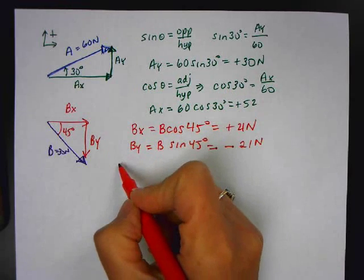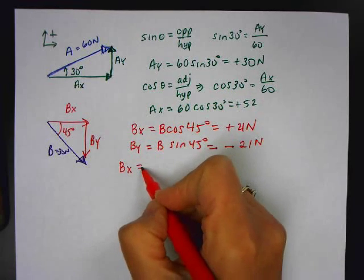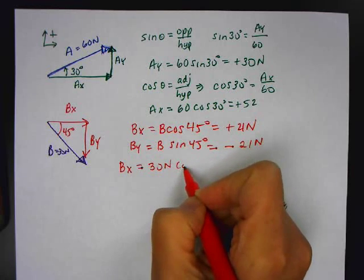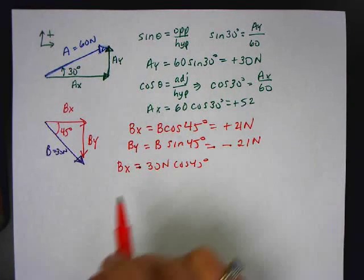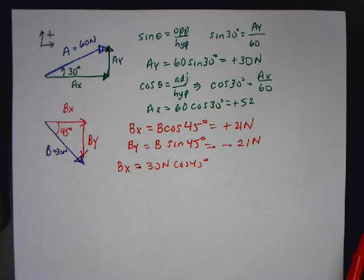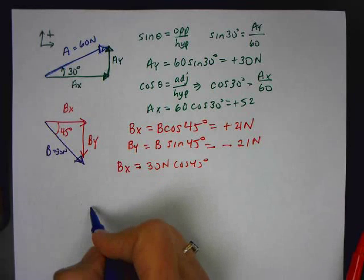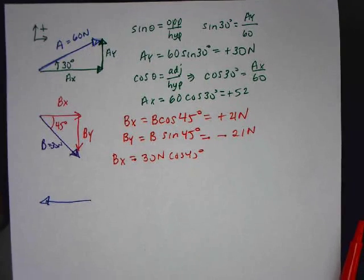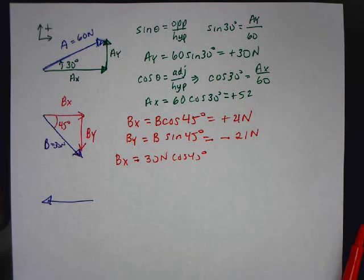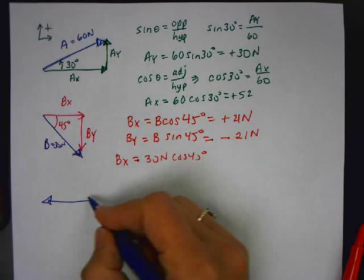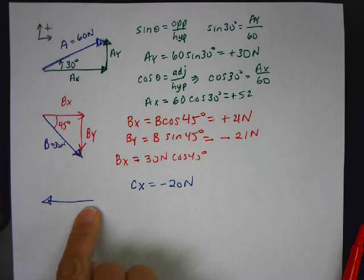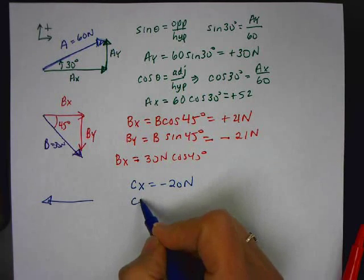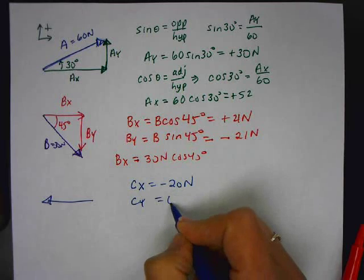When it's 45 degrees, sine and cosine are the same value. But By is opposite the 45-degree angle — that's why it's sine — and Bx is adjacent to the given angle, which is why it's cosine. Substituting: Bx equals 30 newtons times cosine of 45, which comes out to positive 21. By equals 30 newtons times sine of 45, and since it goes down, that's negative 21 newtons. For vector C, it lies on the x-axis — it's entirely horizontal — so Cx equals negative 20 newtons (it goes left), and Cy equals zero.